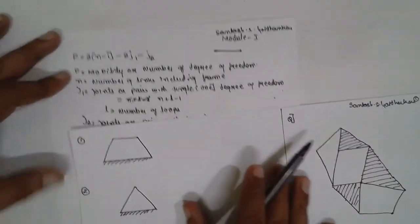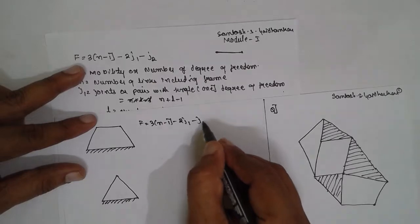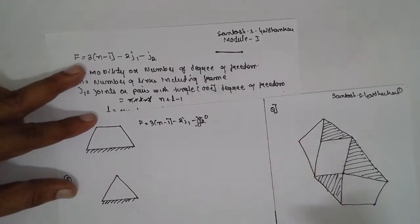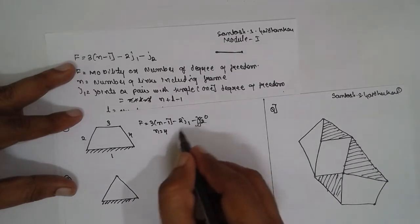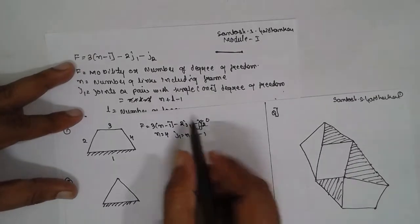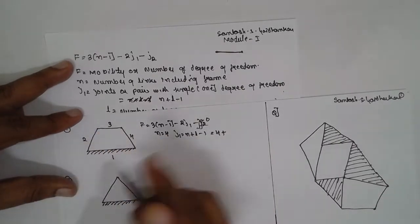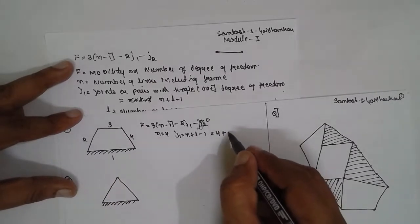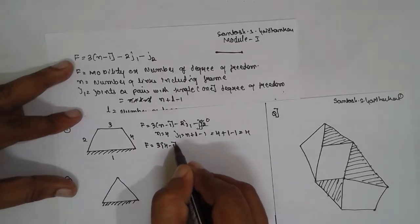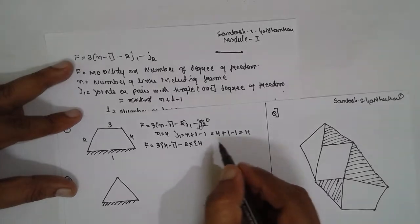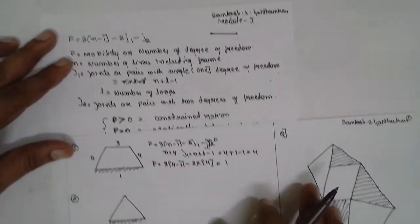This is the first problem. Formula: f = 3(n − 1) − 2·j1 − j2. There is no point contact, so j2 = 0. Number of links: count 1, 2, 3, 4 — so n = 4. For j1: n + l − 1 = 4 + 1 − 1 = 4 (single loop). Substituting: f = 3(4 − 1) − 2(4) = 9 − 8 = 1. Since f = 1, which is greater than 0, this is constrained motion.